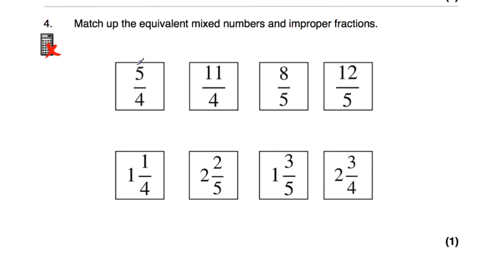Question number 4: match up the equivalent mixed numbers and improper fractions. We've got improper fractions here and mixed numbers below. The denominators of 4 match with two of the mixed numbers, and the denominators of 5 match with the other two. Starting with 5 quarters: how many 4s go into 5? That's 1 remainder 1, so it's 1 and 1 quarter. Then 11 quarters: how many 4s go into 11? That's 2 remainder 3, so it's 2 and 3 quarters.